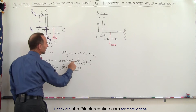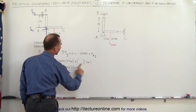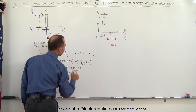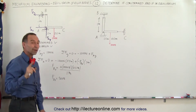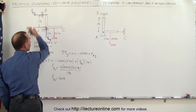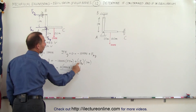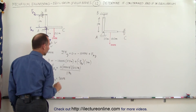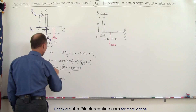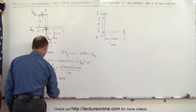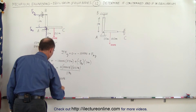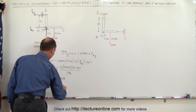Since I'm assuming F sub B is in the negative direction, I have to put a negative to compensate. Therefore, F sub B in the x direction must equal minus 500 newtons — the minus sign indicates it's in the negative x direction.